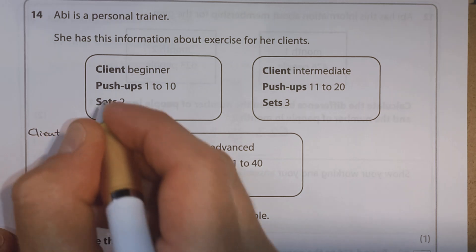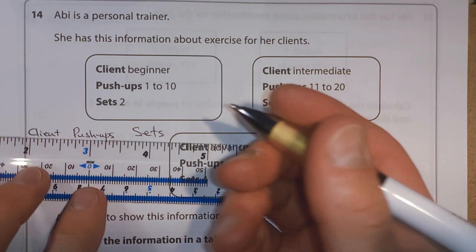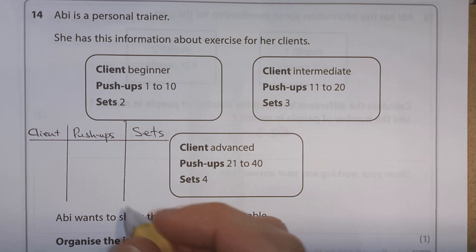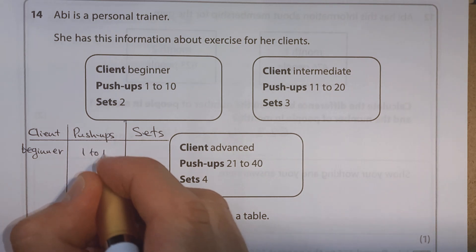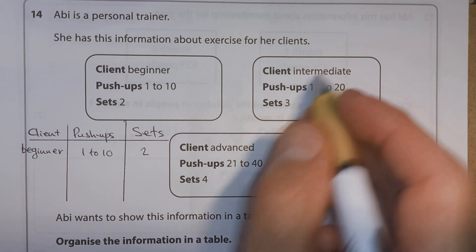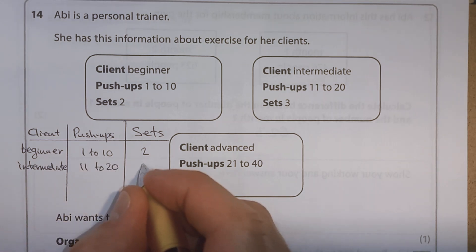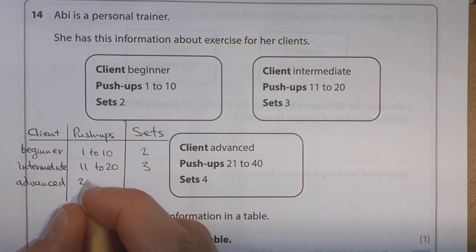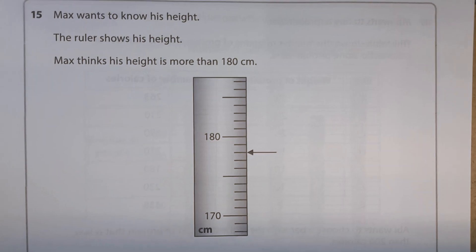So I'm going to have client, push-ups, and sets. And just to make it a little bit tidier, we'll make it a bit more like a table with some lines down. So client 1 is beginner and they can do 1 to 10 push-ups and 2 sets. The next client is intermediate. 11 to 20 push-ups and 3 sets. And the last client. So basically we're copying the information that they've given us, but we're putting it in a table. So it's a bit easier to read and you can see it all in one place instead of having to look at the three separate bits of information.